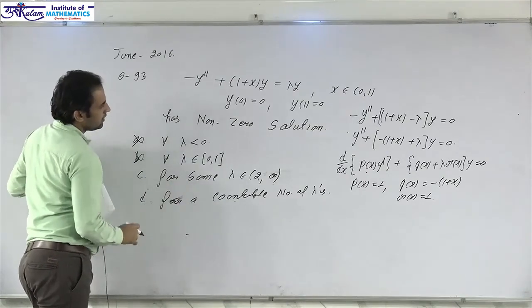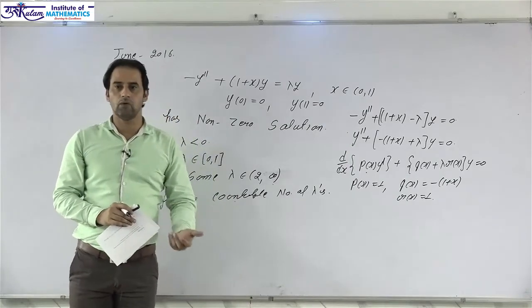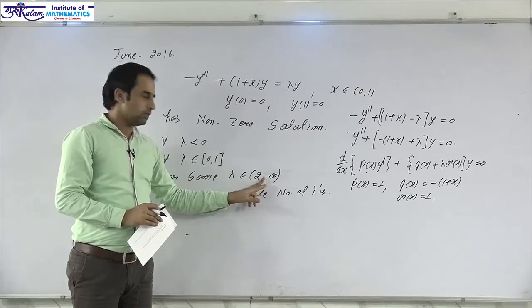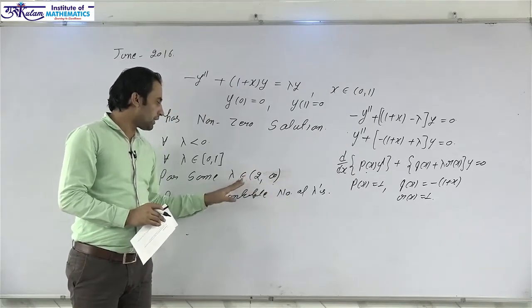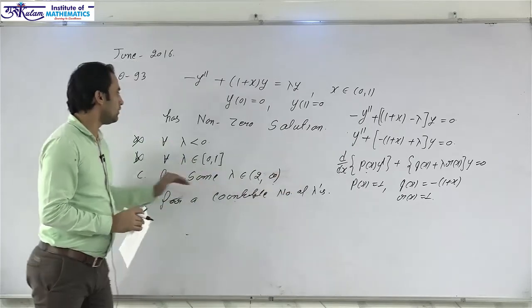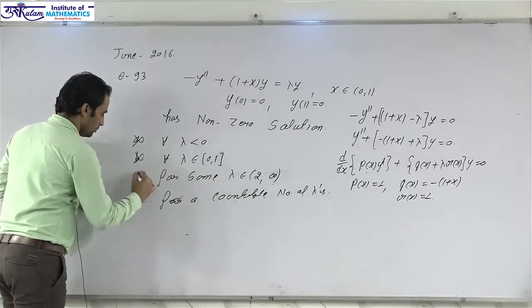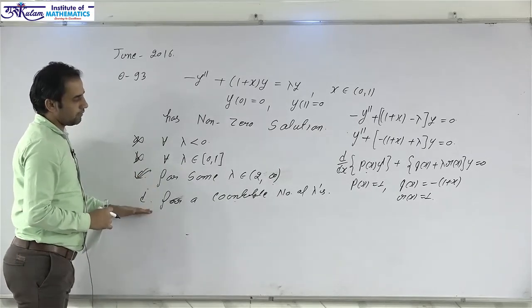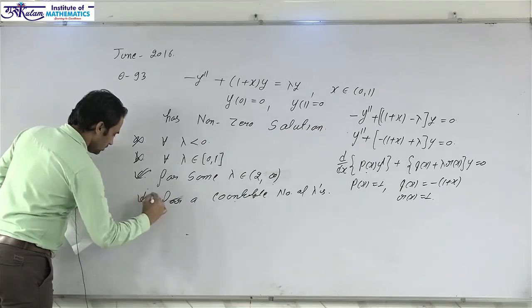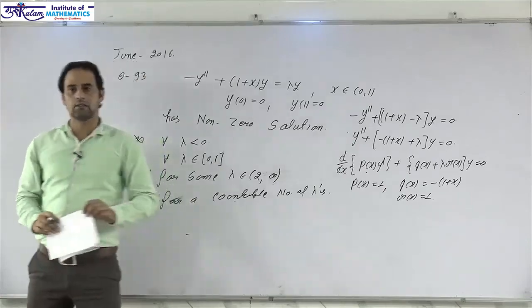For option C, since the set of eigenvalues is bounded below and unbounded above, there must exist some lambda belonging to (2, infinity). In fact, there are countably infinite lambdas in (2, infinity) for which this equation has a non-zero solution, so option C is correct. The set of eigenvalues is always countably infinite, so option D is also correct. Therefore, answers C and D are both correct.